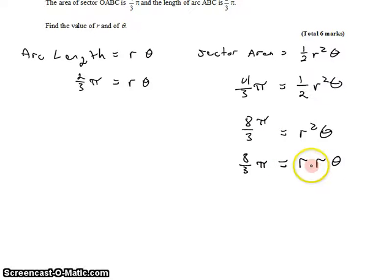Which means that we have R times theta. Just like over here. R times theta. What that means is that 2 thirds of pi is R theta. 2 thirds of pi is R theta, and that's the same as this R theta. And we can make that substitution.